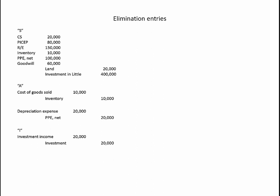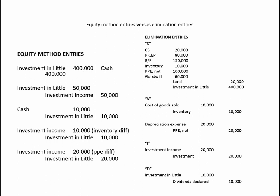Next, we have the I for Investment Income entry. We have $20,000 of investment income in the parent's ledger, so we eliminate investment income with a debit and a credit to the Investment in Little account. Finally, the D for Dividends entry. We only want consolidated financial statements to reflect transactions with external third parties. The dividends paid by Little were paid to Big, the related party — the only dividends paid to an external agent were those paid by Big Company. So we eliminate the dividends paid by Little: we credit Dividends Declared and debit Investment in Little.